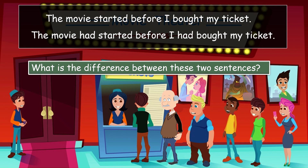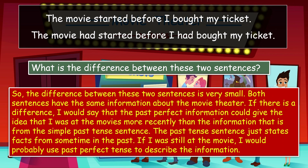What is the difference between these two sentences? The difference between these two sentences is very small — both sentences have the same information about the movie theater. If there is a difference, the past perfect could give the idea that I was at the movies more recently than the simple past tense sentence. The past tense sentence just states facts from some time in the past.